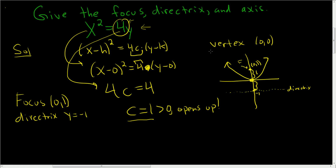What else do we need? Oh, we needed the axis. The axis cuts the parabola right in half — it's this dotted line here that goes right through the middle, cuts it like a knife. And that's the line x equals 0. So the axis is x equals 0.